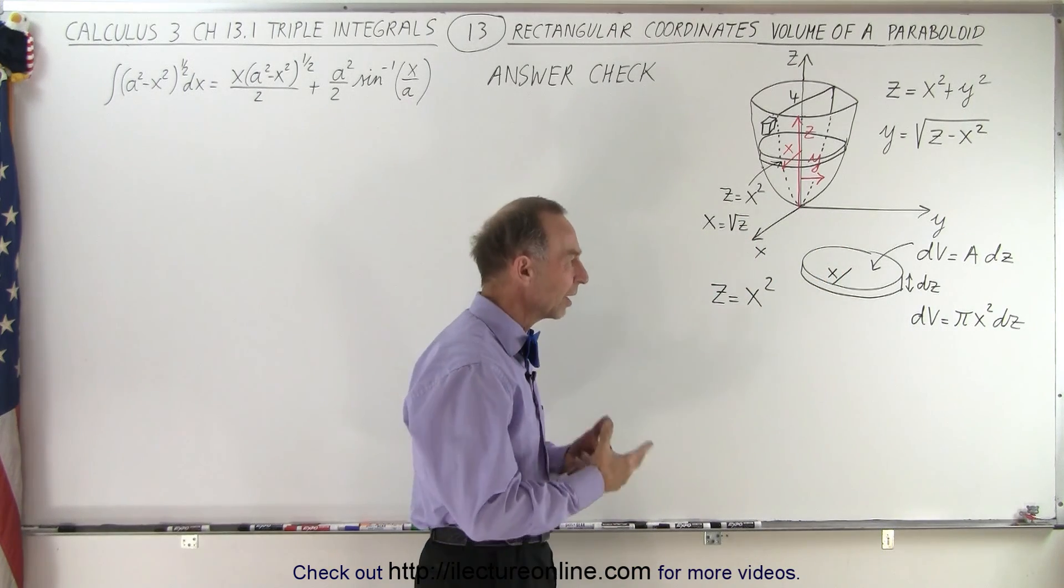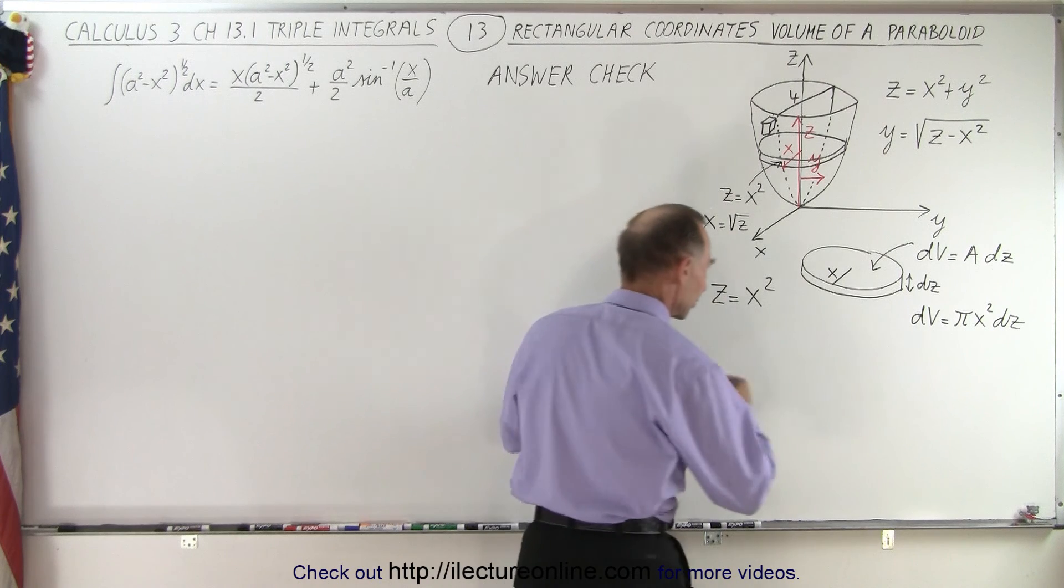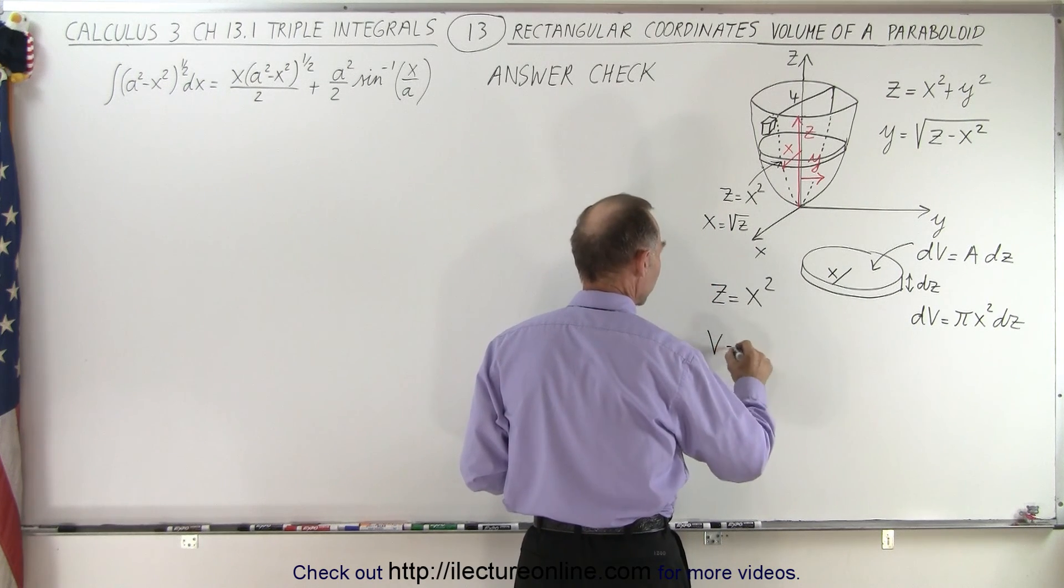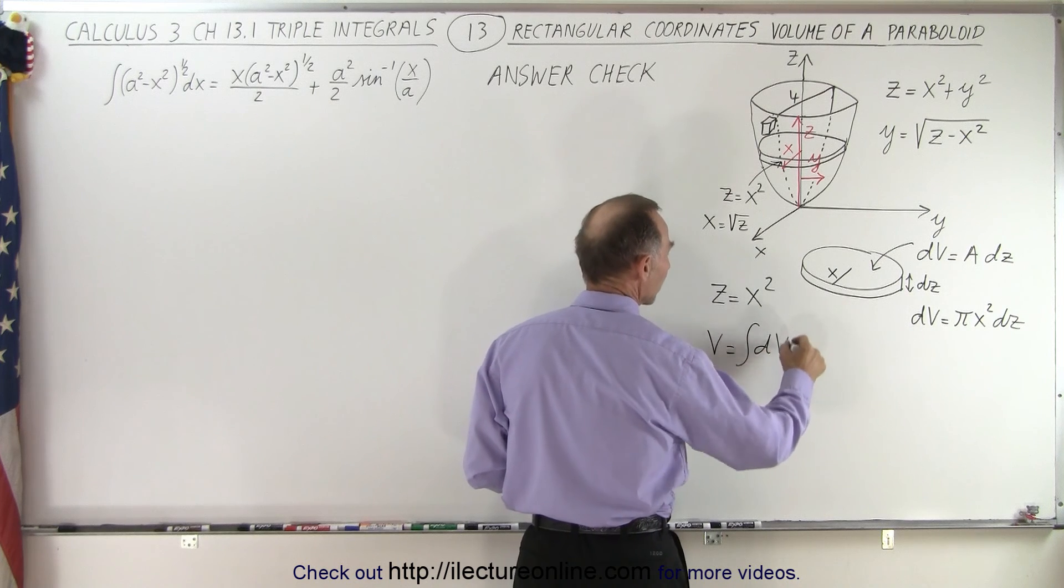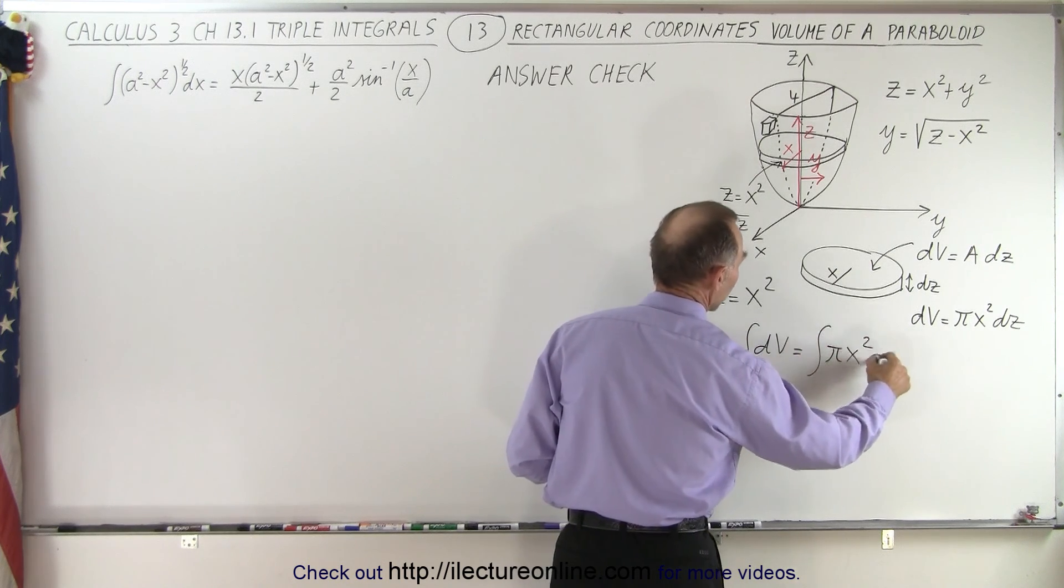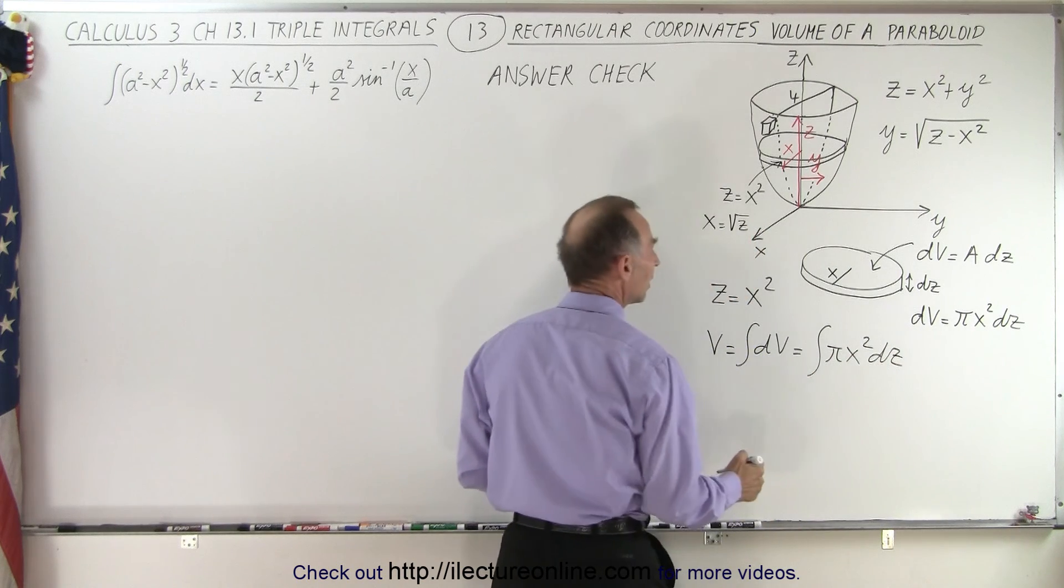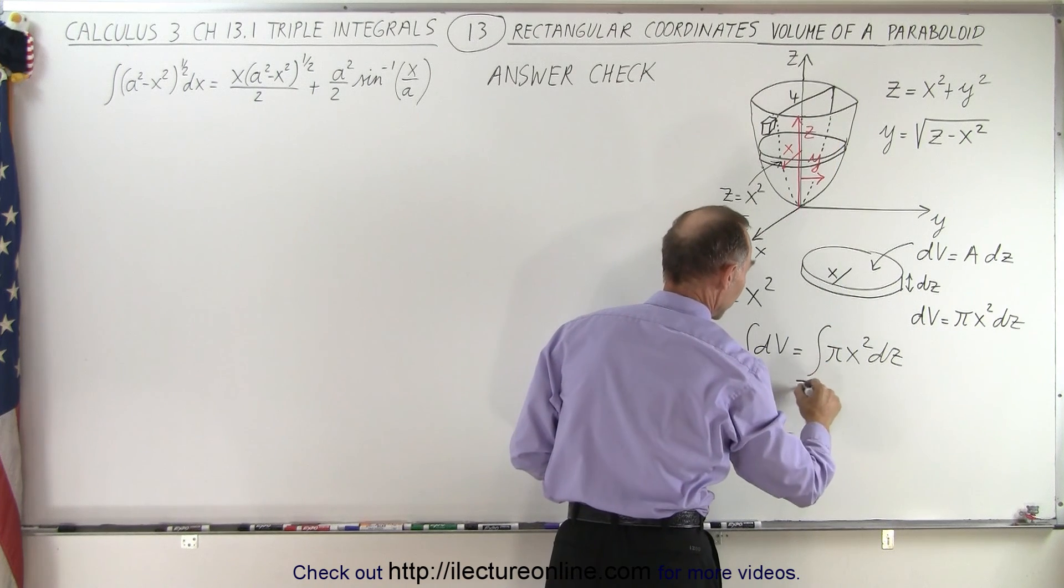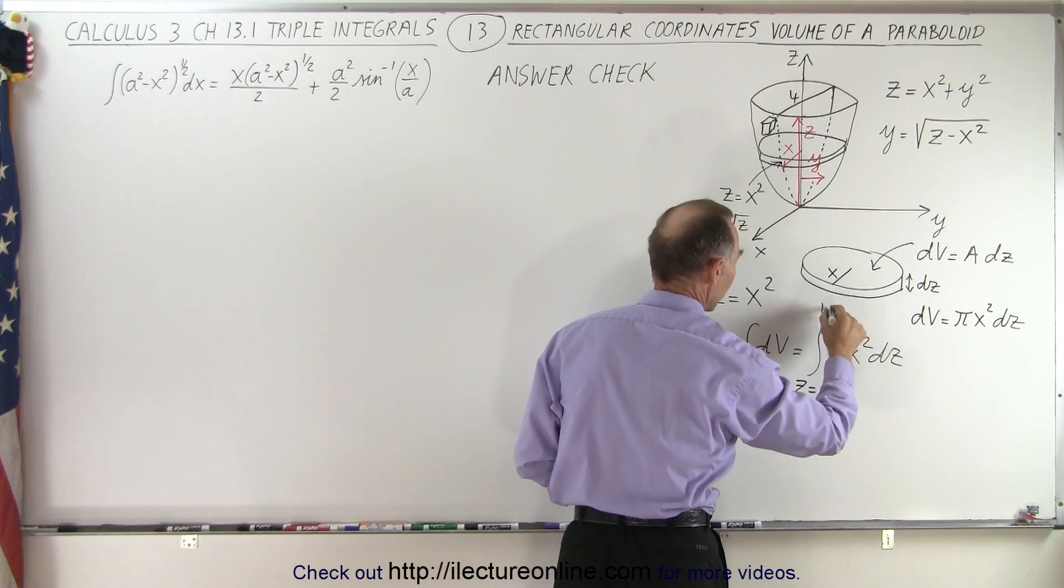Of course we can't integrate x² and dz together, so we'll have to rearrange that. But first, volume equals the integral of dV, which equals the integral of πx²dz. We're going to integrate in the z direction from z = 0 to 4.